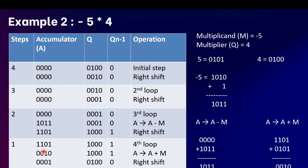At count equals 1, the accumulator is 1101, Q is 1000, and Q minus one is 1. As the LSB of Q is 0 and Q minus one is 1, we perform A equals A plus M and then an arithmetic right shift. This gives accumulator 0000, Q 01000, and Q minus one 0. Our final answer, which is accumulator concatenated with Q, is 0001 and 0100. Converting to decimal gives minus 20, and the extra carry confirms the result is negative.